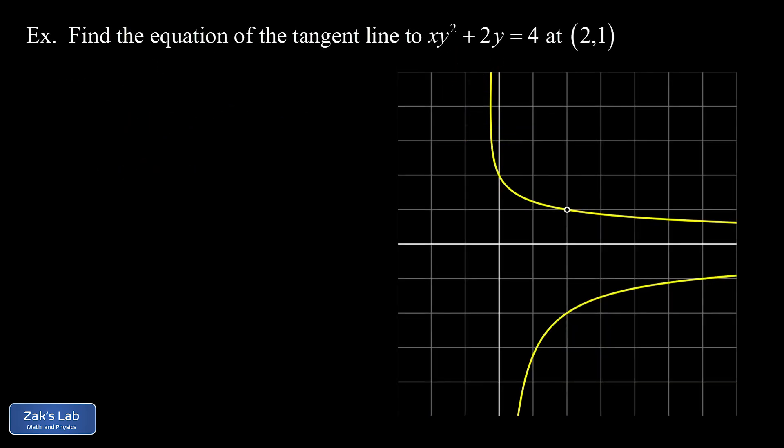Now just to wrap it up here's a reminder of why we care about implicit differentiation. We're given the implicitly defined curve xy² + 2y = 4 and we're asked to find the equation of the tangent line at the point (2,1) that you can see labeled in the plot.